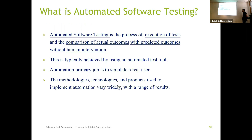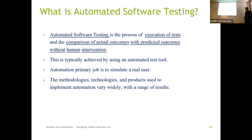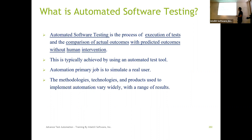Now, how do we actually do automated software testing? What we are doing as part of testing is going through step-by-step instructions and comparing the actual result with the expected outcome. The tool needs to do the same thing — it's execution of tests and comparison of actual outcomes with predicted outcomes without human intelligence. That's what the automation testing tool is supposed to do.